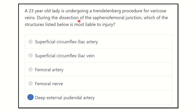It is now clear that the deep external pudendal artery is very close to the saphenofemoral junction, because it passes below the great saphenous vein but in front of the femoral vein. It may be damaged or injured during dissection of the saphenofemoral junction. Thank you all.